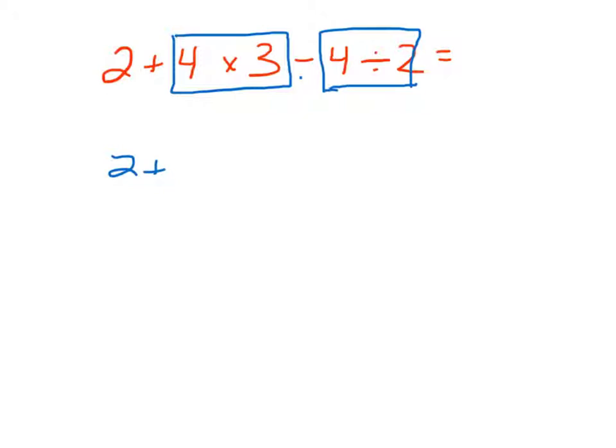I'm going to have 2 plus. And then 4 times 3, that'll be 12. And then I'm going to take the minus symbol you see up here. Put that in there. And over here, 4 divided by 2 is 2. So, I'll put that in there.